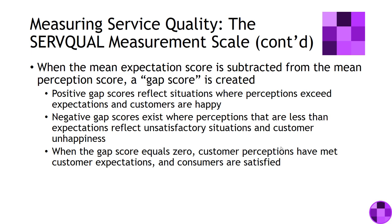The reason you aim for zero is that if you're scoring positive gaps — perceptions exceeding expectations — the customer will be happy initially, but will eventually track back to zero because you can't exceed expectations every time. If you're tracking at zero, you're on target. If you're tracking below zero, expectations are greater than what was perceived, and you'll need to deal with customer unhappiness, service failure, and service recovery. The challenge is to stay as close to zero as possible to achieve consistency.